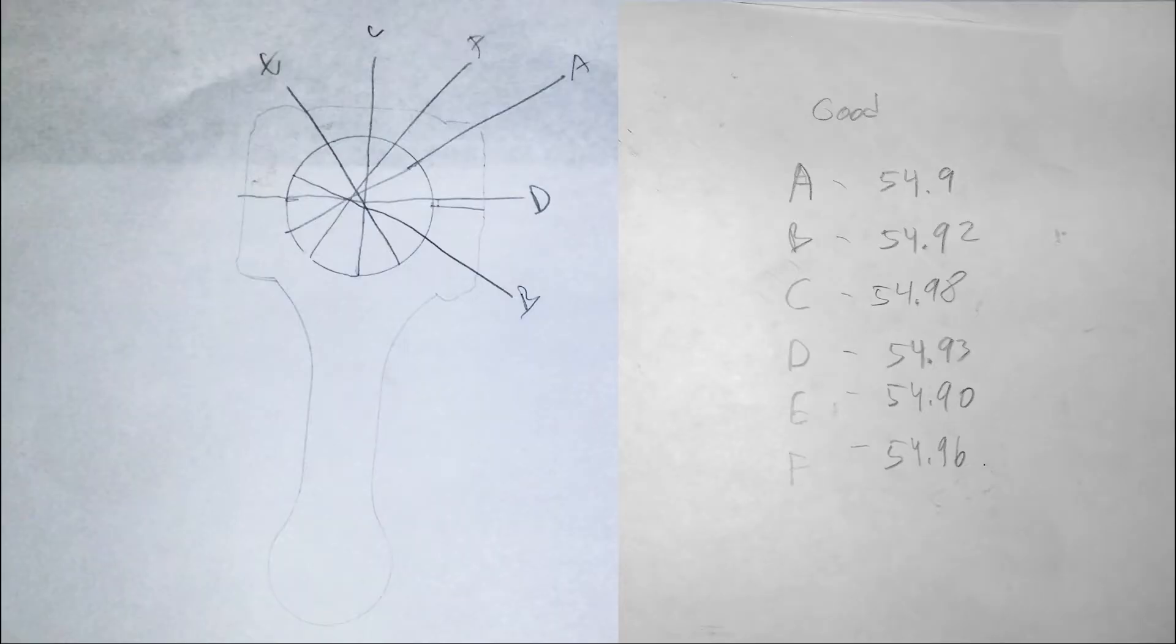I did the same kind of measuring on this rod, and got these numbers. The difference between the largest and smallest is only 0.08mm, that's 0.003 inches.